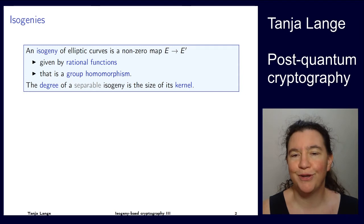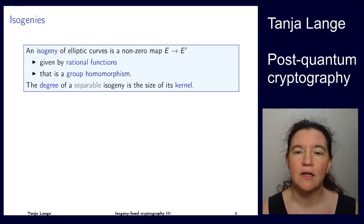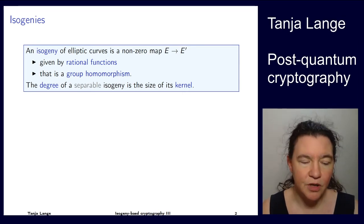So isogenies are the main topic in isogeny-based crypto. So let's dive into what is an isogeny. So far we've seen elliptic curves, and I've motivated via some graphs that if we have some similar graph, then we can do nice cryptography.